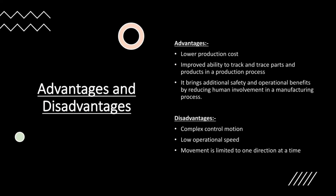Speaking about the advantages of machine vision systems, they have a lower production cost, an improved ability to track and trace parts and products in a production process, and they bring additional safety and operational benefits by reducing human involvement in the manufacturing process.